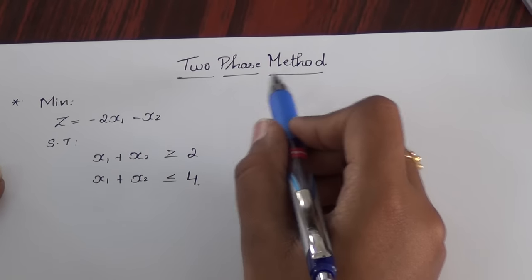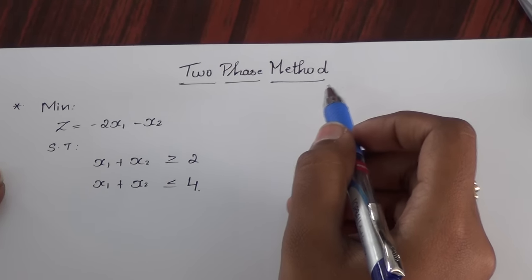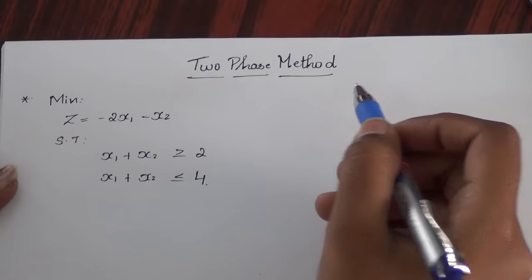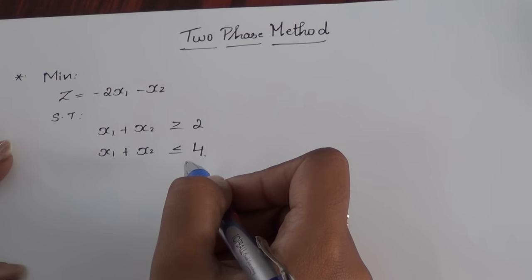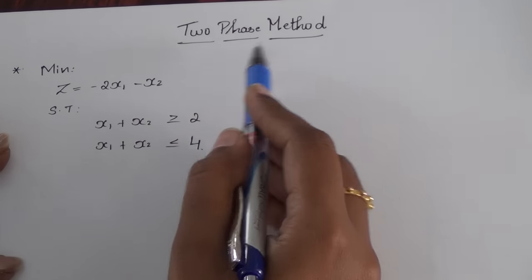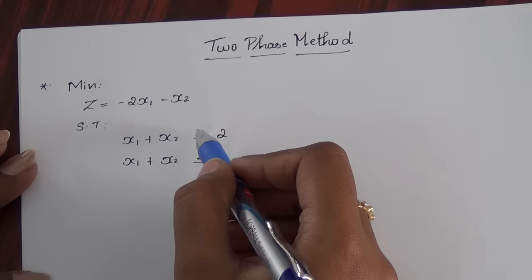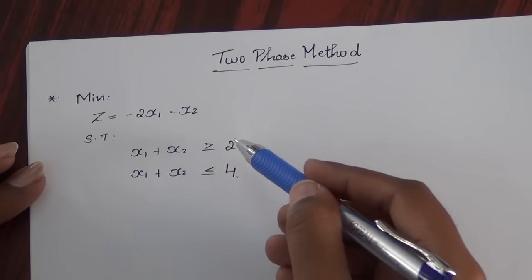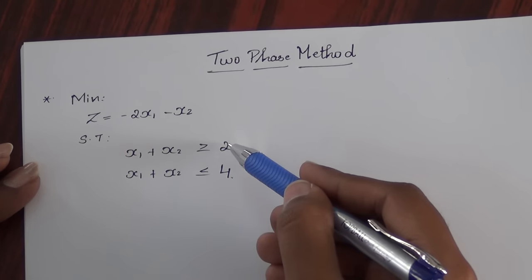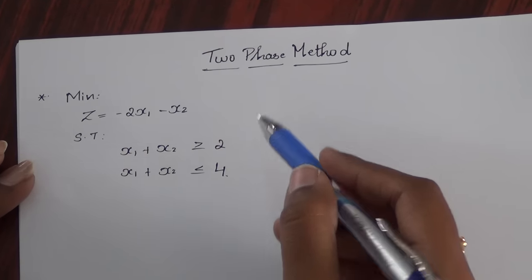Two phase method is used for solving linear programming problems. It is specifically used for solving problems which have a mixture of constraints such as greater than or equal to, or less than or equal to.